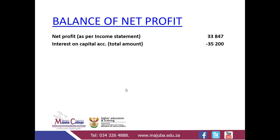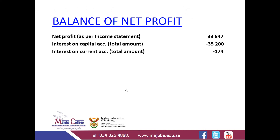The reason interest on capital is a minus is because the partners are entitled to it. The next item to consider is the interest on current account. In this specific case, the partnership could be entitled to pay the net amount of 174 to the partners, because partners had either a negative debit balance or a credit balance on the current account.